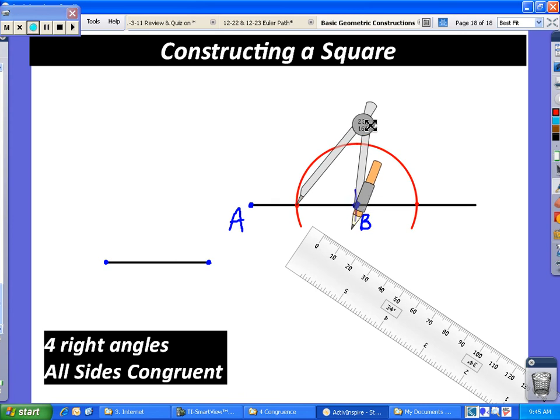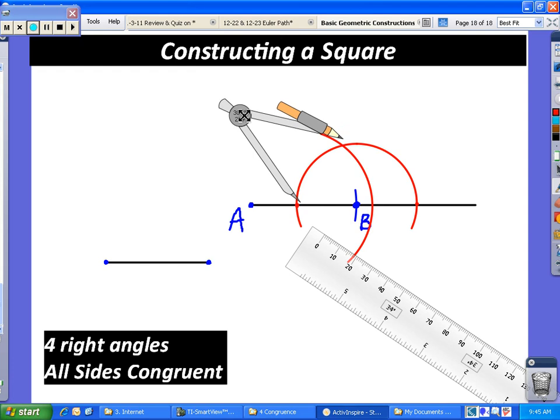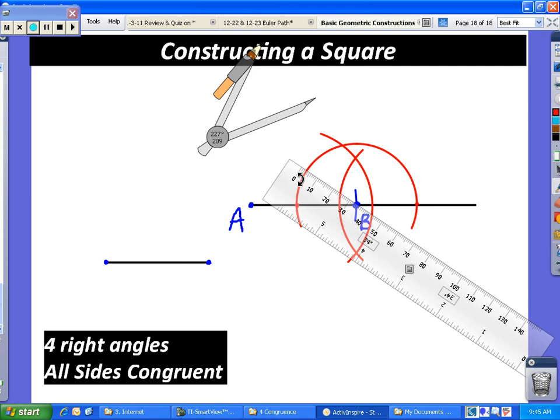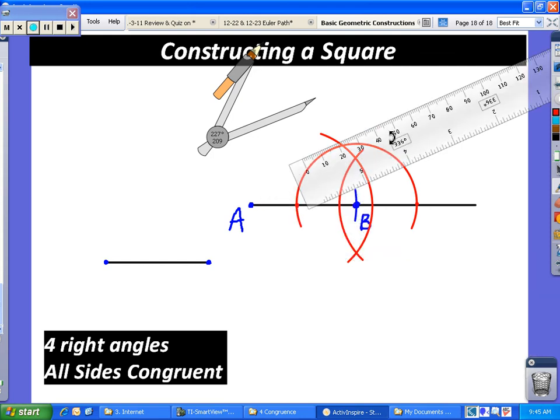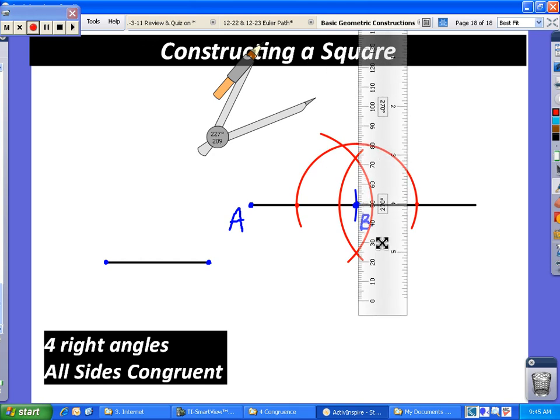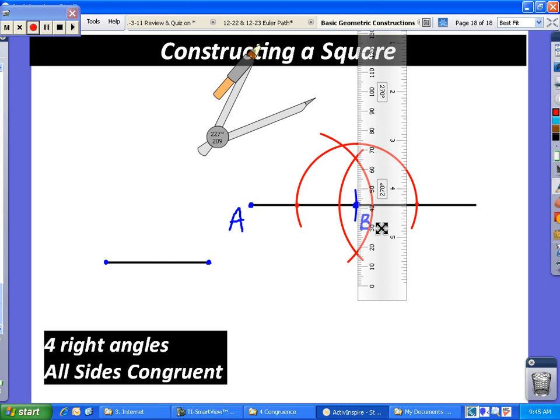We are now going to open our compass a little bit more than halfway. Remember we talked about doing that so that we can do a perpendicular line. And now from the other point on the line, you're going to do the same thing. And now you're going to use your ruler to draw a line that is perpendicular. And again, we are not using a protractor to measure this. We're doing this all with a compass and straight edge. That is it.